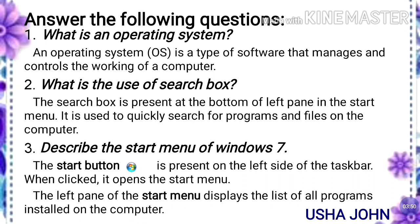An operating system is a type of software that manages and controls the working of a computer. Second question: what is the use of the search box? The search box is present at the bottom of the left pane in the start menu. It is used to quickly search for programs and files on the computer.